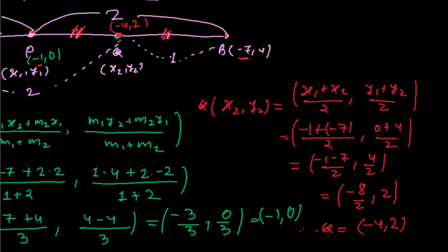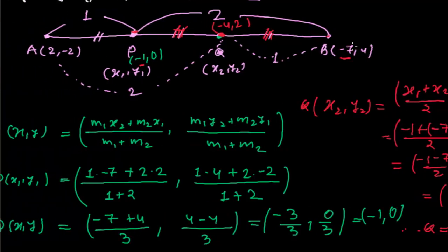So we got the answer: the line AB was trisected by points P and Q. P is minus 1 comma 0 and Q is minus 4 comma 2. Whether the line is divided into 4, 5, or 7 equal parts, we first find the ratio in which the points cut the line, then apply the section formula or midpoint formula accordingly. We will meet in the next video with a different type of problem in section formula. Bye bye for now.